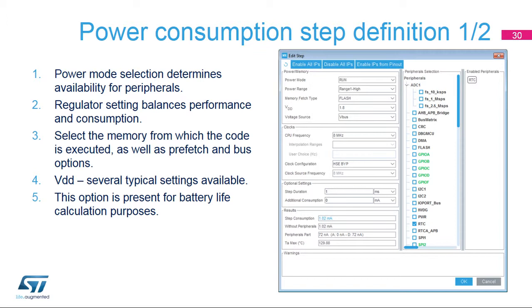The power step is determined by several characteristics, with the power mode being the most important. The availability and characteristics of each power mode are described in the specific reference manual or data sheet. Power mode selection has the most significant impact on the availability of other settings, interfaces, and power performance balance. The voltage regulator sets the core voltage — at lower voltages, the system clock frequency is limited, but the power consumption is often dramatically reduced.